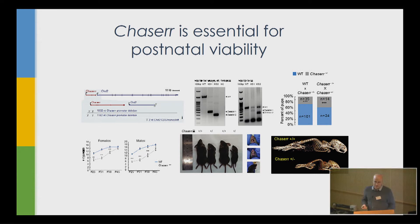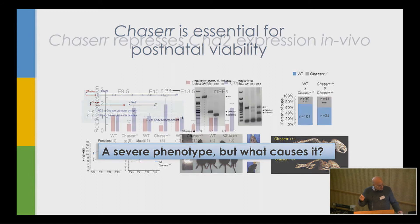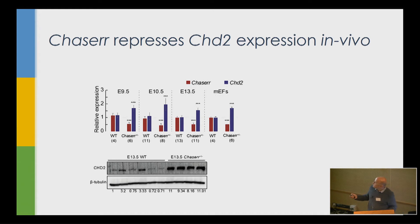There is occasional malocclusion and poorly developed thymus. The most prominent feature is a really drastic reduction in size. In contrast to loss of CHD2, which causes no overt phenotype, loss of this lncRNA appears to cause a very severe phenotype — about as severe as observed to date for any lncRNA knockout. If we look at genome-wide expression and specifically at CHD2, loss of a single copy of Chaser causes an increase in CHD2 expression, about 60% to twofold on RNA, and in some cases a tenfold increase at the protein level in embryos.